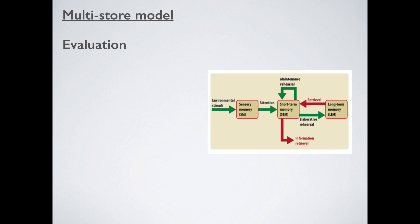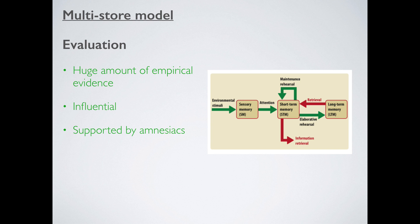So we've got this multi-store model and it seems to have a fair amount of evidence behind it. Let's evaluate it quickly. In terms of strengths, there's a huge amount of empirical evidence — multiple different studies: Glanzer and Cunitz, Craik and Watkins, and all the different STM and LTM studies already mentioned — all of these fit very nicely into the multi-store model. Second, it's influential. Even to this day — remember this was published in 1968 — psychologists are still using this to explain a lot of memory processes, so it must still be holding up pretty well.